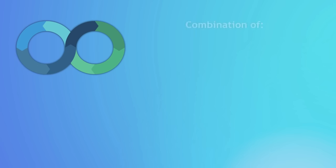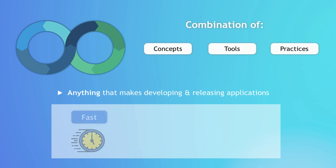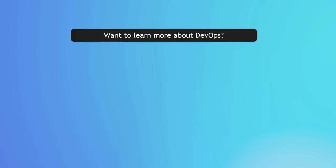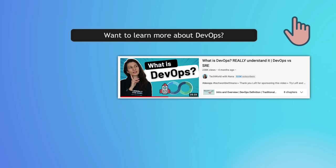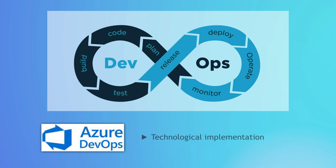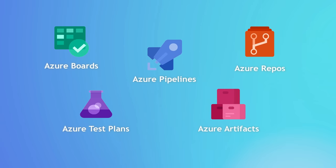DevOps is many things — a combination of concepts and tools that makes developing and releasing applications fast, automated, and with high quality. A project needs to implement DevOps practices to achieve an efficient workflow. In short, it's about making the software development lifecycle as efficient as possible by fully or mostly automating it. Azure DevOps is basically a technological implementation of that DevOps process, covering the whole software development lifecycle with features for each part of it.